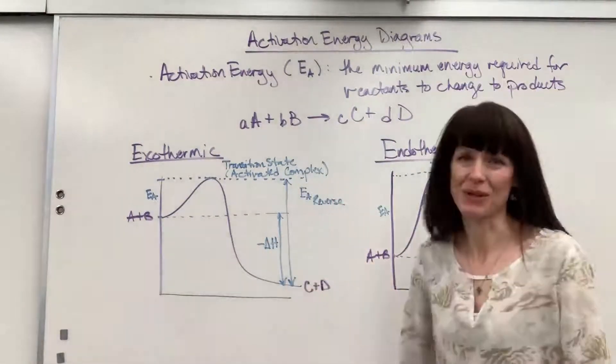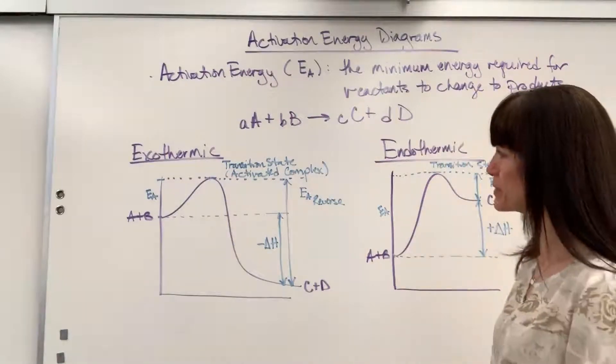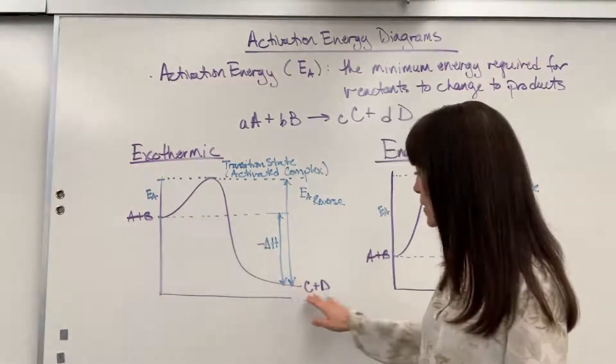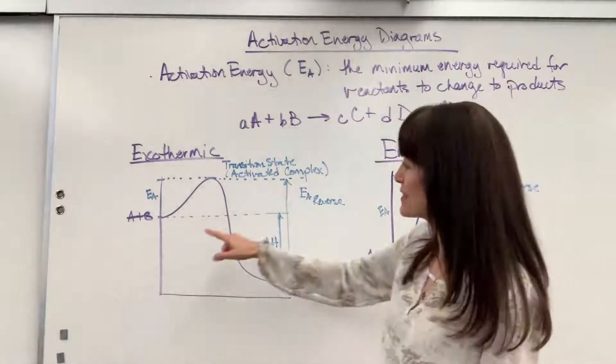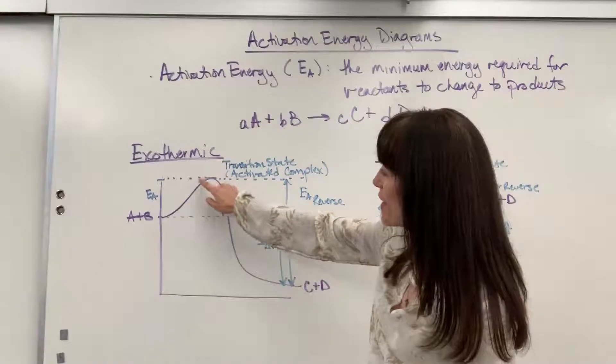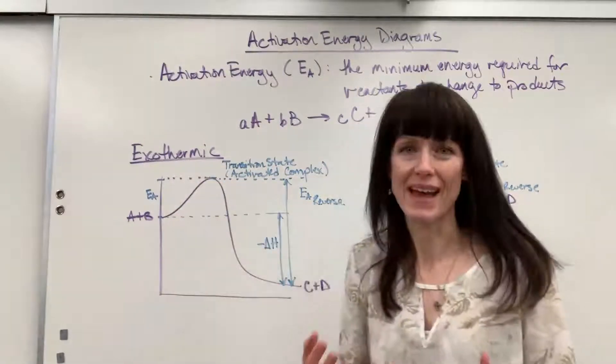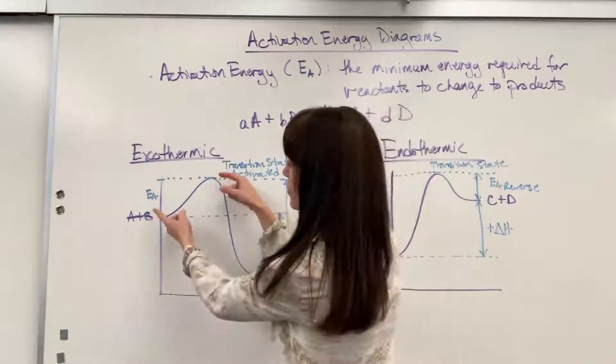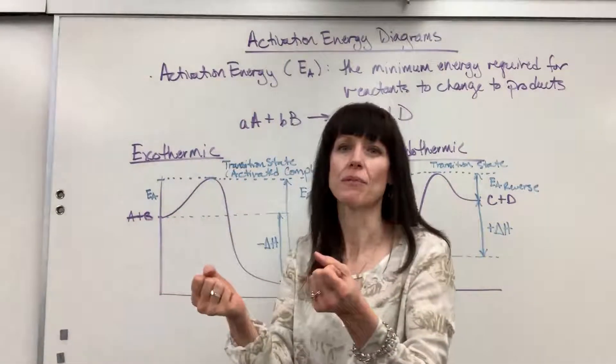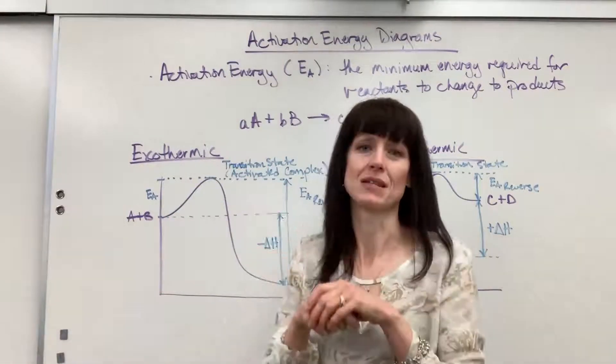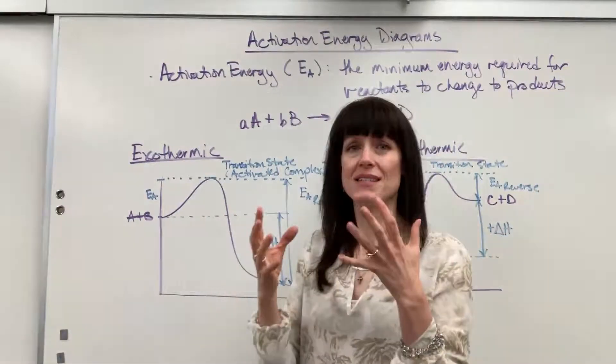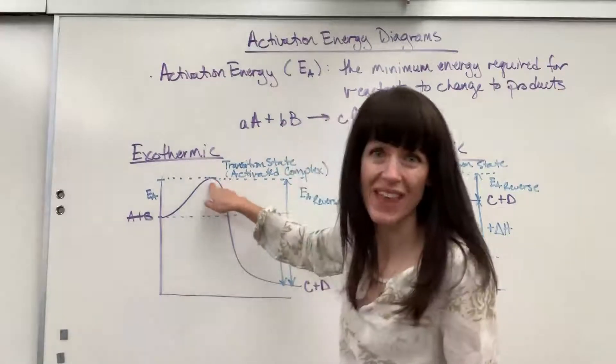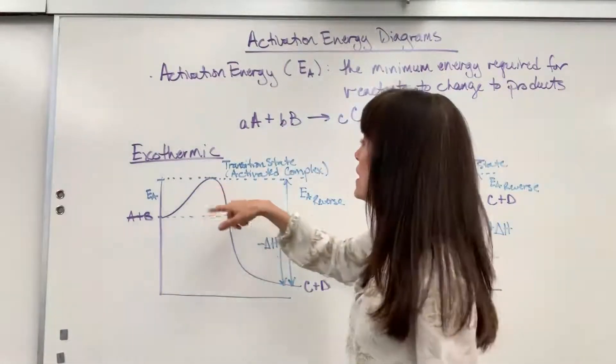Let's look at exothermic first. So here's how you draw it. We're going to begin with our reactants A and B, and we're going to end with our product C and D. Now notice this hump right here. That is indicating the amount of energy, minimum energy, that's required for the reactants to break bonds and then form bonds to make the products. That sensation of reactants breaking, bonds forming for products happens right there at the apex, the very, very top.